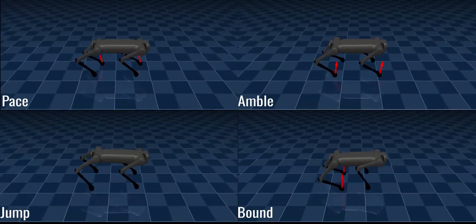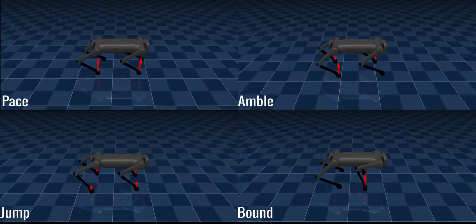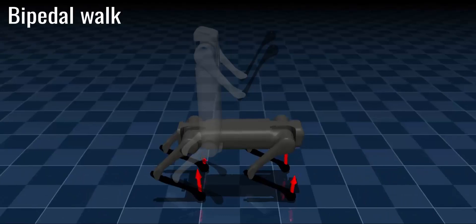Our controller is able to stabilize a great variety of gaits like trot, pace, amble, bound, and jump.